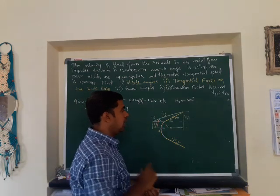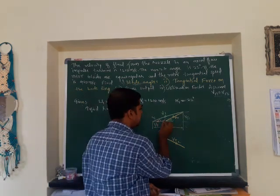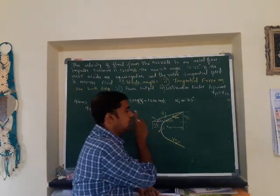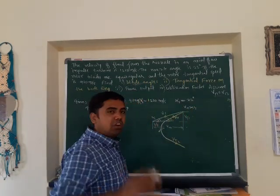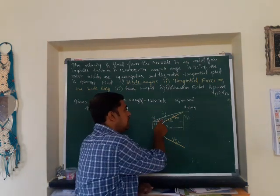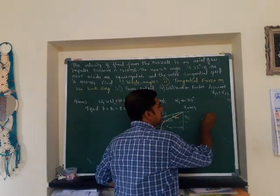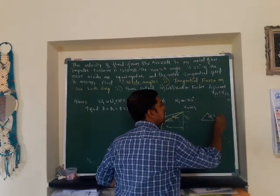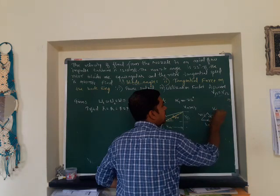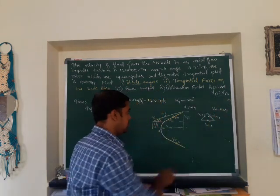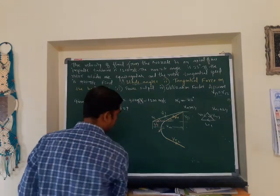We have drawn an obtuse-angle triangle, assuming VU1 is greater than U1. After calculating VU1 we will confirm this. If VU1 is greater than U1, the inlet velocity triangle is an obtuse-angle triangle as drawn. If VU1 is less than U1, it will be an acute-angle triangle with VR1, U1 and V1 arranged differently.